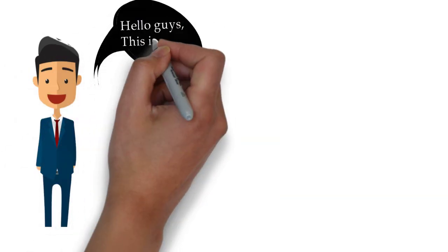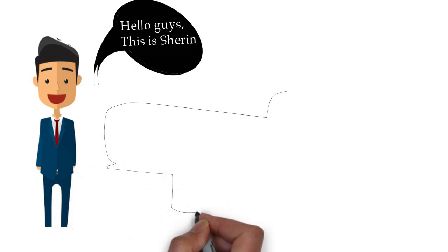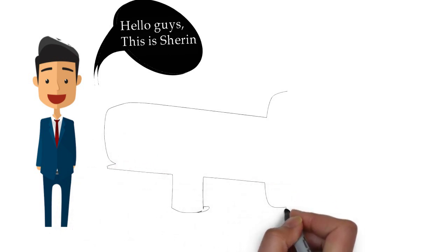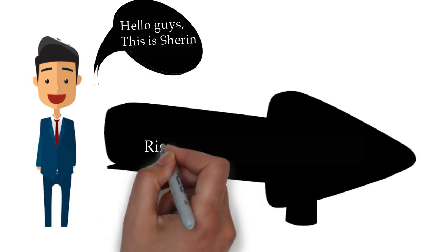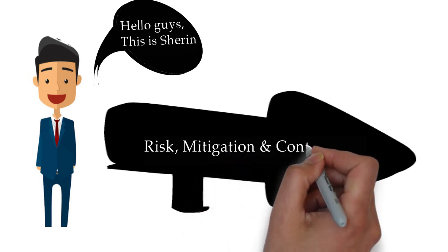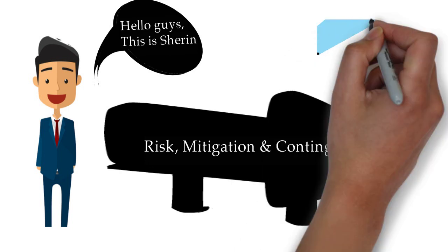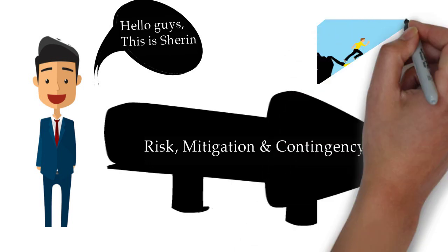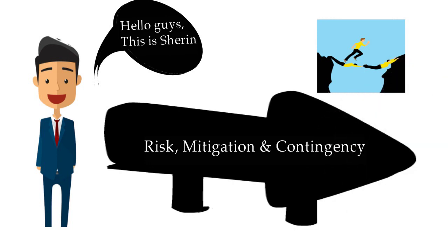Hi guys, this is Sharif. You might have heard of many terms like risk mitigation and contingency plan when you deal with a software testing project. So what are these things? How can we foresee a risk and have a mitigation plan? If any risk occurs, how can we have a contingency plan? In this session we are going to discuss all these things in depth and with examples. The session is about risk mitigation and contingency plan.